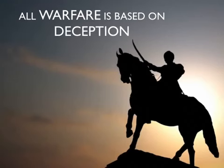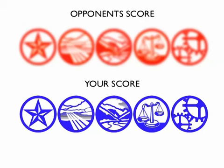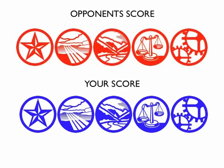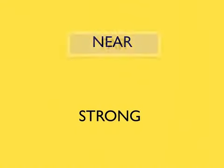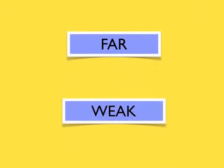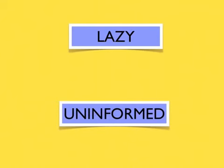Key concept three: all warfare is based on deception. Knowing yourself and fooling your opponent is required to win. You must constantly monitor your opponent to uncover their relative strength against the five factors. At the same time, you must also hide your position. For Sun Tzu, this meant appearing far away when near, or appearing weak when strong. For you, it may mean appearing lazy when motivated, or uninformed when you are an expert.